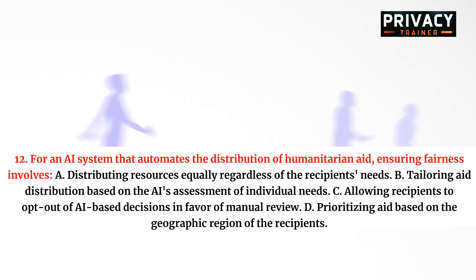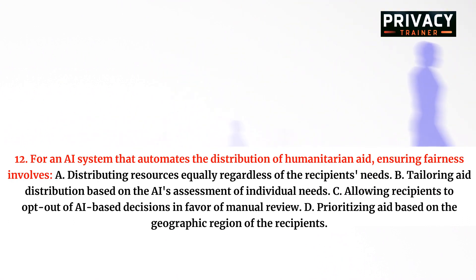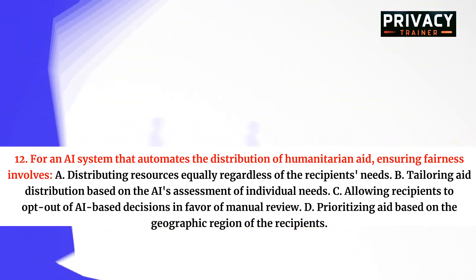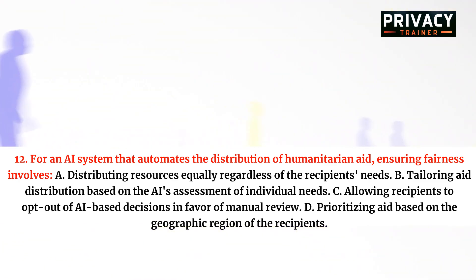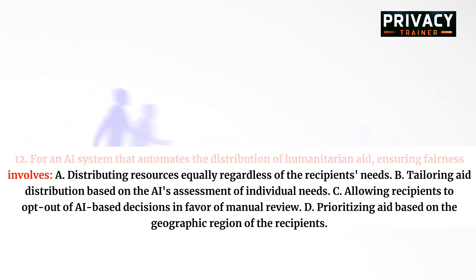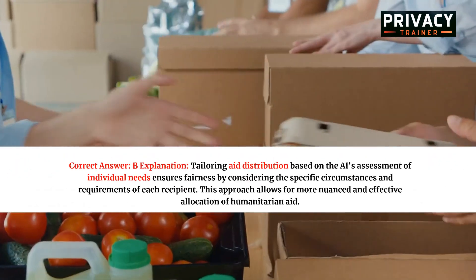Question 12. For an AI system that automates the distribution of humanitarian aid, ensuring fairness involves: A. Distributing resources equally regardless of the recipient's needs. B. Tailoring aid distribution based on the AI's assessment of individual needs. C. Allowing recipients to opt out of AI-based decisions in favor of manual review. D. Prioritizing aid based on the geographic region of the recipients.